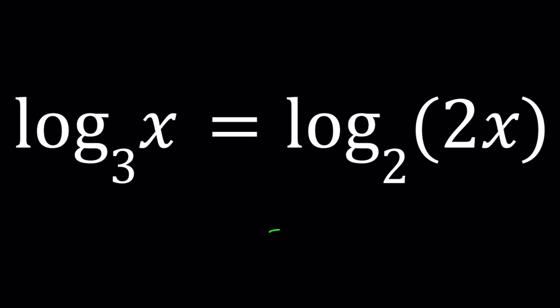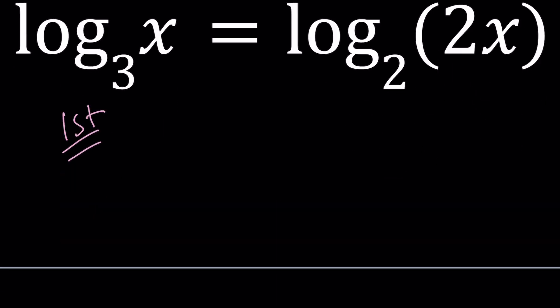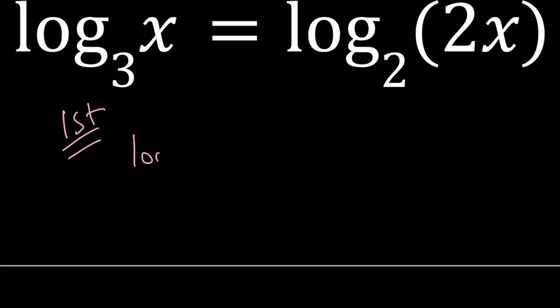First method. For my first method, I'm going to set both of these equal to the same thing. Log x with base 3 and log 2x with base 2, suppose they're both equal to t. Since they're equal, they're equal to the same thing. From here we get two equations, which is what is nice about substitution.